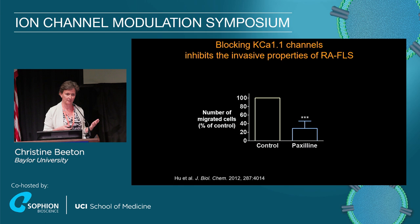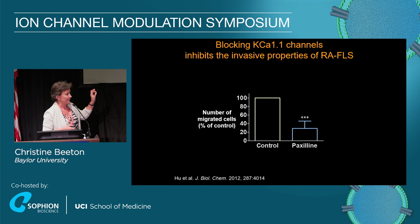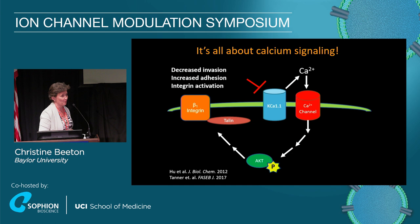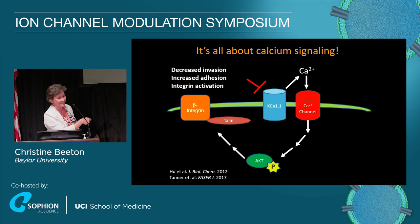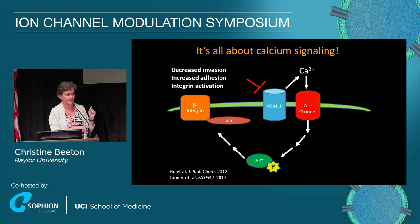We wondered how blocking the potassium channel was inhibiting the invasiveness of those cells. I had worked for a long time on potassium channels in T lymphocytes, so I expected it would inhibit calcium influx necessary for cell activation — that's what happens in T cells. But we got the opposite result. When you block the KCA1.1 channel, instead of inhibiting calcium influx, we actually have a huge calcium influx that we are increasingly convinced is carried by CAV1.2, though we still need a few more experiments to be absolutely sure.